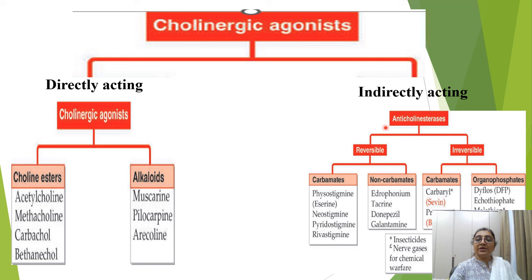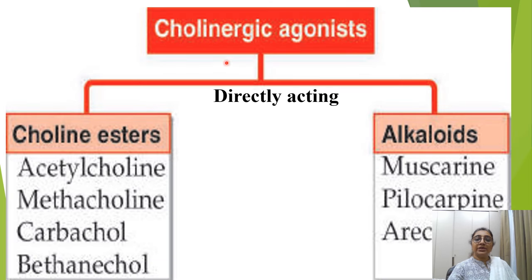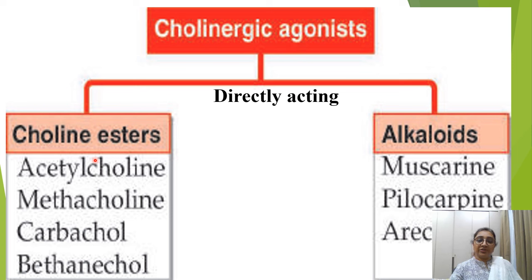Directly acting cholinergic agonists include cholinesters and alkaloids. In the cholinester group, acetylcholine is the naturally released neurotransmitter but cannot be used therapeutically because it is destroyed immediately after release. Methacholine, carbachol, and bethanechol mimic the action of acetylcholine by binding with the receptor.